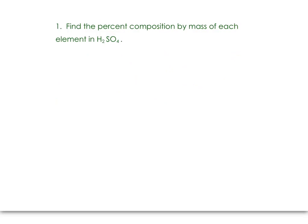This first problem is where we have to look at molar mass. We want to find the percent composition by mass of each element in H2SO4. So we'll look at each element, hydrogen, sulfur, and oxygen, relative to the entire molar mass of the compound. So let's calculate that first.